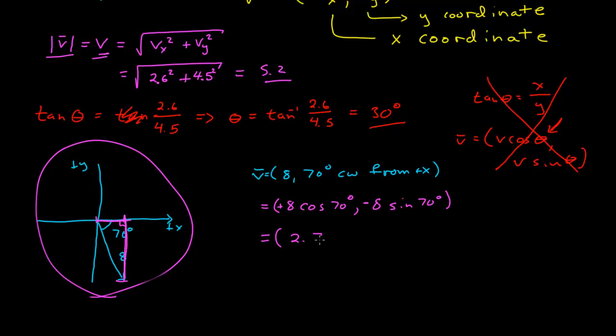Alright, and we solve those, we get 2.74 for the positive, and then negative 7.52 for the y coordinate. That ends this module.